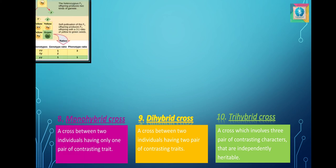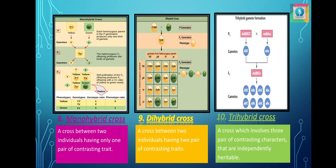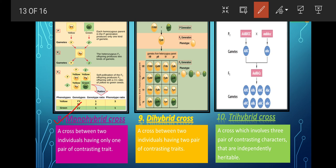Next is monohybrid, dihybrid, and trihybrid cross. A monohybrid cross is a cross or breeding done between two individuals having one pair of contrasting traits, producing all hybrid generations for that character. Here a single pair of genes is involved and one character is considered and studied. The predicted phenotypic ratio in a monohybrid cross is 3:1.